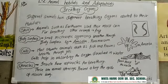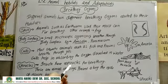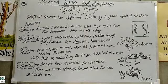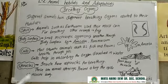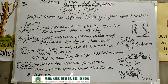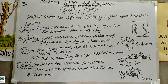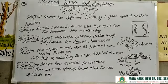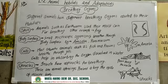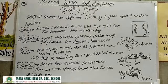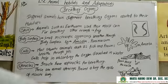Next is spiracles. Insects have spiracles for breathing. These are small openings present along the body side — small holes which are present in the body side. Like this, here are the spiracles.